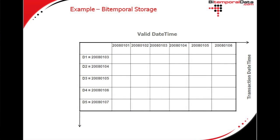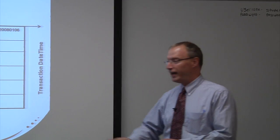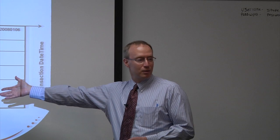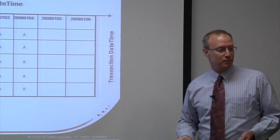So here's our example, and we're going to walk through this matrix as if we had bitemporal storage. The first event: we have a credit rating of A for the third through the fourth. Not surprisingly, those two columns have A in them. But people may ask why A goes down the whole column — that's because this is the transaction dimension of time on the y-axis. When we put something in the database, we have to assume it's going to be in the database until further notice. We don't know when A is going to stop being the value for the third or the fourth in the database.